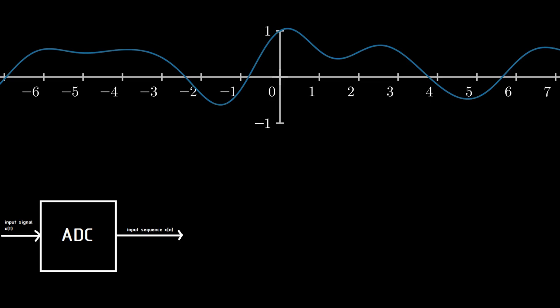In DSP, an analog signal XT is given to an analog to digital converter which takes samples and digitizes it to get a discrete signal XN.